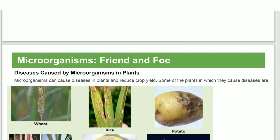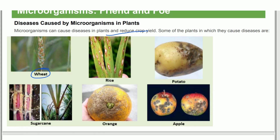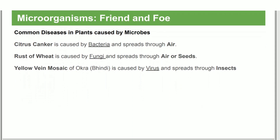Foot and mouth disease also affects cattle. Plants are also affected by microbial diseases, with wheat, rice, and other crops being damaged, reducing yield. Common plant diseases include citrus canker, rust of wheat, and yellow vein mosaic — caused by bacteria, viruses, and fungi.